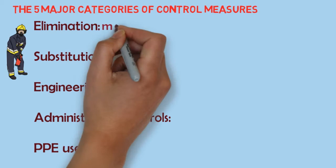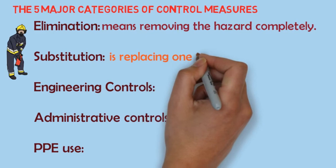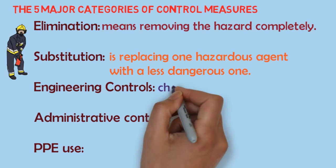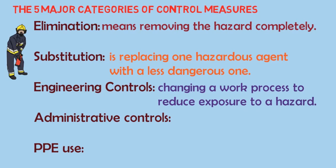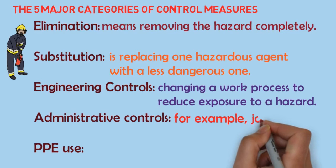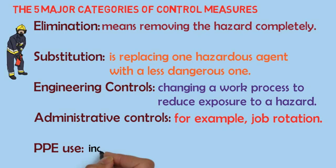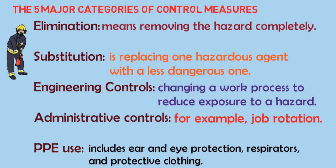Eliminating a hazard means removing the hazard completely. Substitution is replacing one hazardous agent or work process with a less dangerous one. An engineering control may mean changing a piece of machinery or a work process to reduce exposure to a hazard. Working a limited number of hours in a hazardous area is an example of administrative control, such as job rotation. Personal protective equipment includes ear and eye protection, respirators and protective clothing.